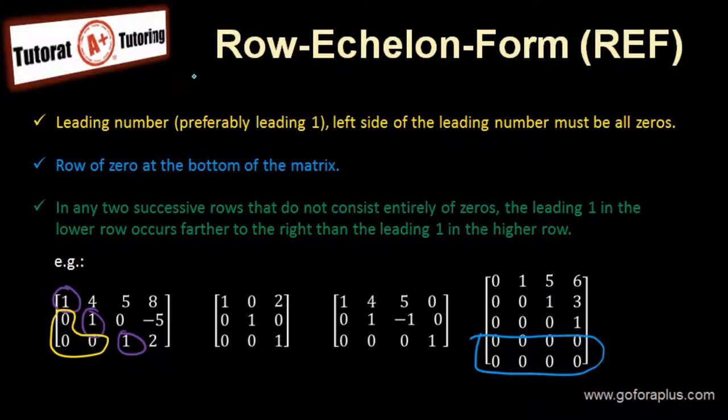Now the last point: if any two successive rows that do not consist entirely of zeros, the leading 1 in the lower row occurs farther to the right than the leading 1 in the higher row.